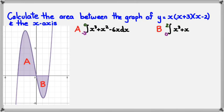Working zone A out, well integrating it first, I'm going to get x⁴/4 + x³/3 - 3x², and that's of course between 0 and -3.